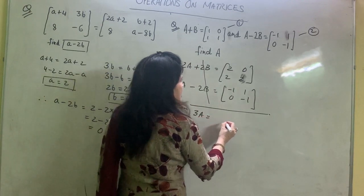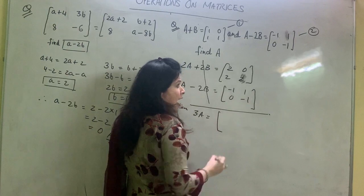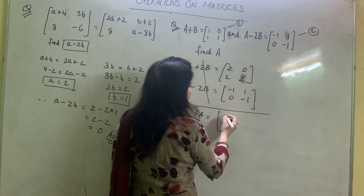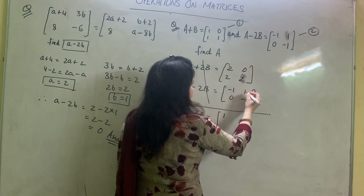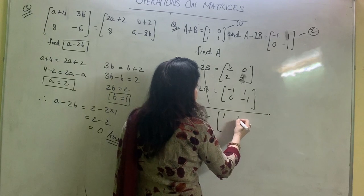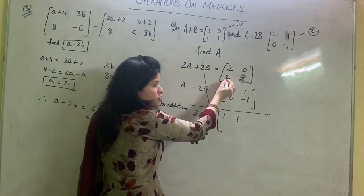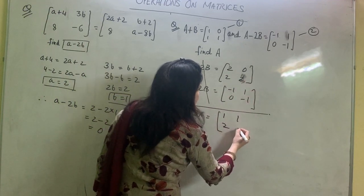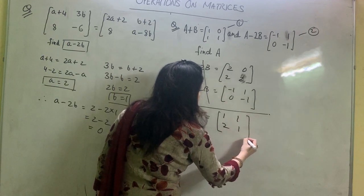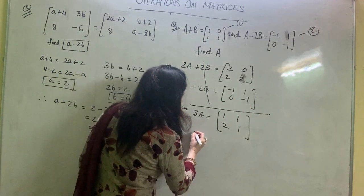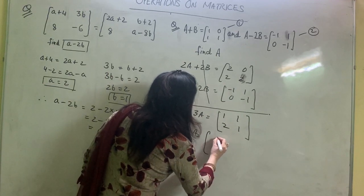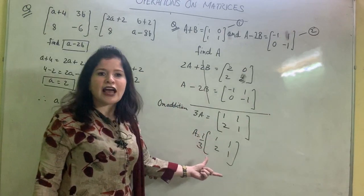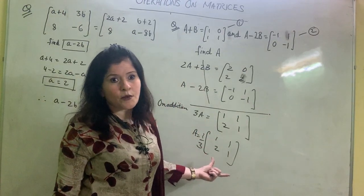Adding corresponding entries: 3A = [2+(-1), 0+1; 2+0, 2+(-1)] = [1, 1; 2, 1]. Therefore A = (1/3)[1, 1; 2, 1]. This is the final answer, and this was this year's board question.